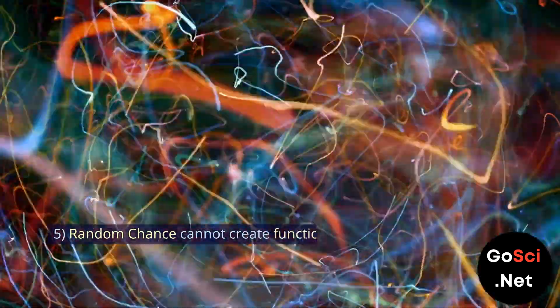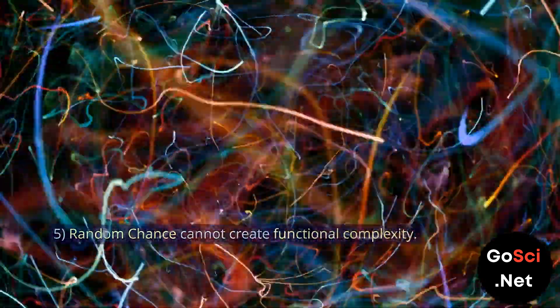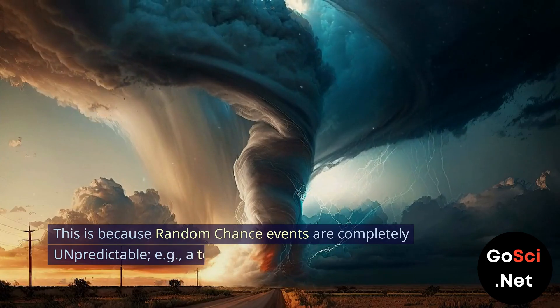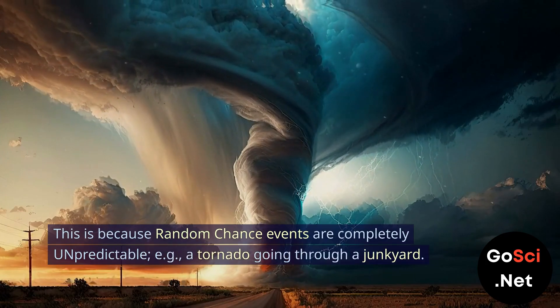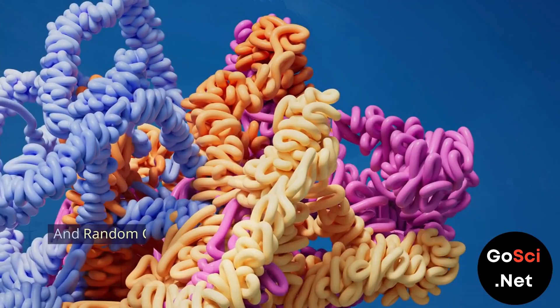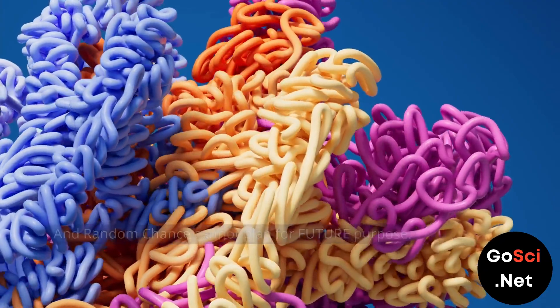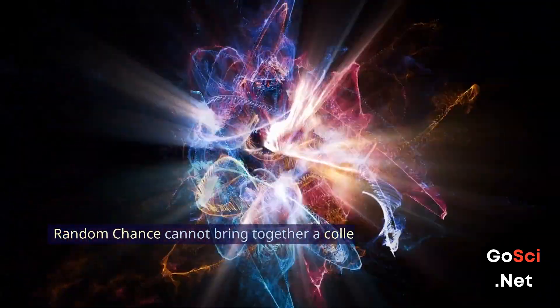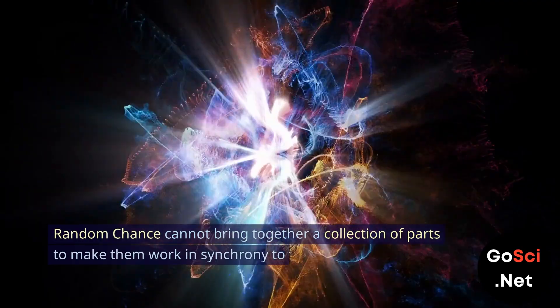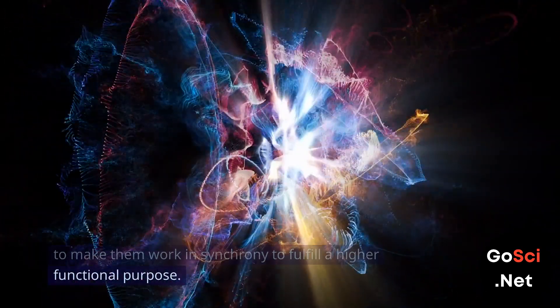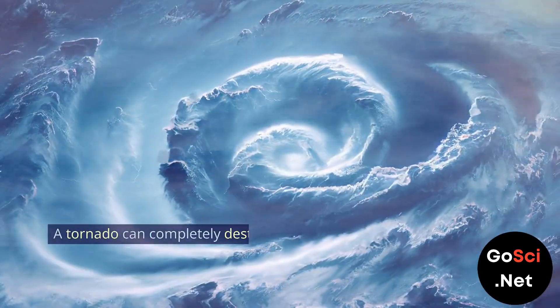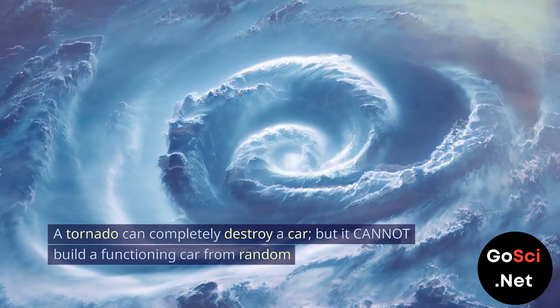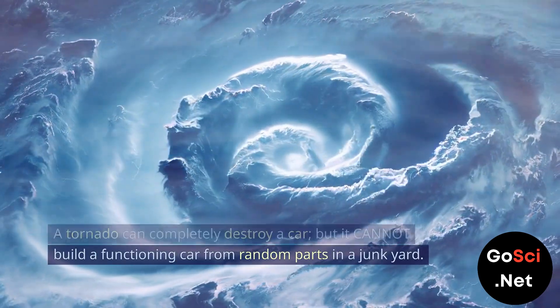Fifth, random chance cannot create functional complexity. This is because random chance events are completely unpredictable. For example, a tornado going through a junkyard. And random chance cannot plan for future purpose. Random chance cannot bring together a collection of parts to make them work in synchrony to fulfill a higher functional purpose. A tornado can completely destroy a car, but it cannot build a functioning car from random parts in a junkyard.